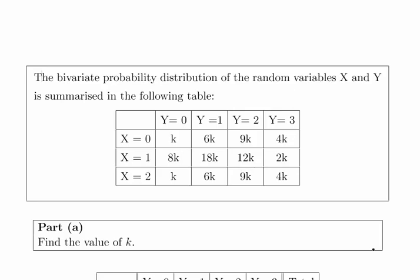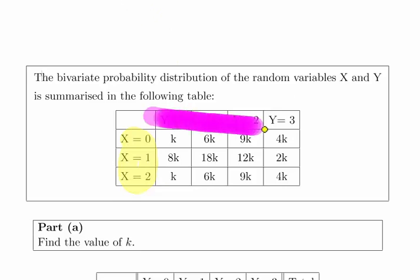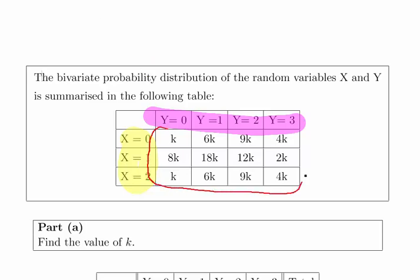We have a bivariate probability distribution with variables X and Y. X takes the values 0, 1, and 2, and Y takes the values 0, 1, 2, and 3. In the cells we have the joint probabilities of each.